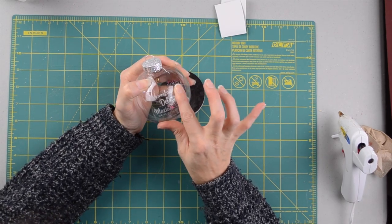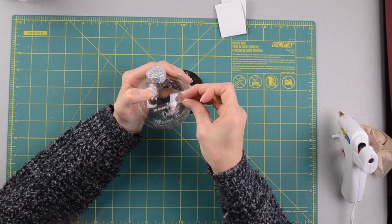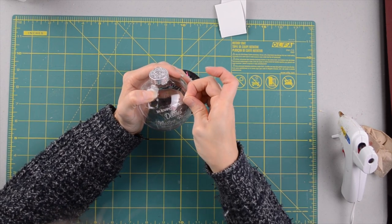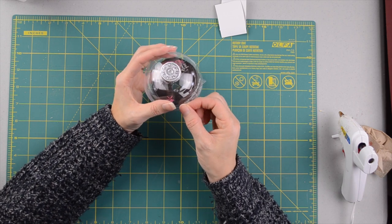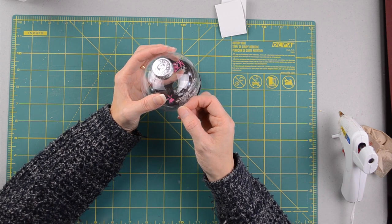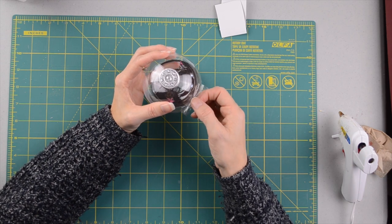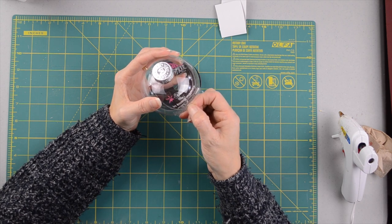So after you have all the letters down, then you can start peeling it up. Peel your contact sheet up. If your letters don't come up when you start peeling off, then go ahead and put your contact paper back down and then just rub it some more.